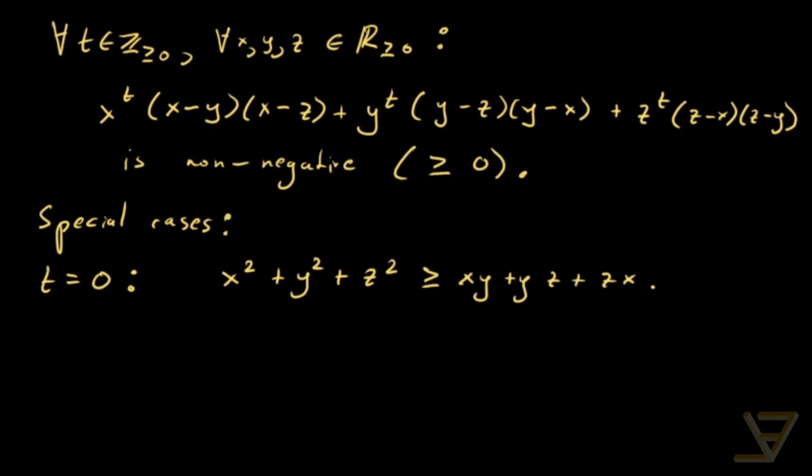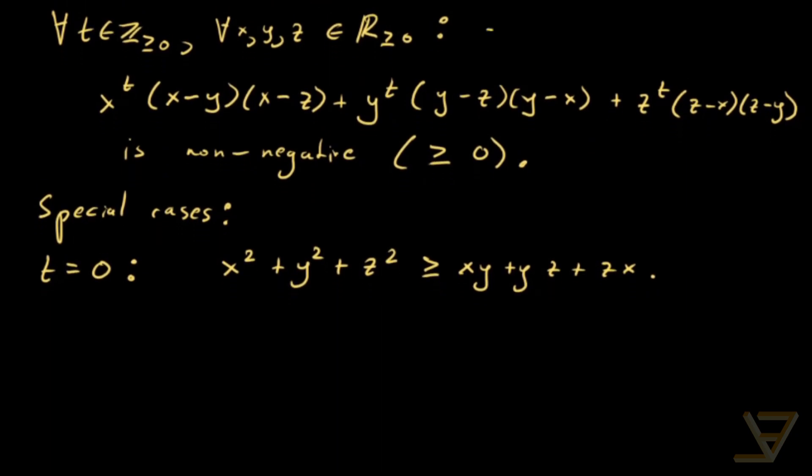And something that I should mention is that we said here that x, y, and z have to be in the non-negative reals. But if t is an even non-negative integer, then x, y, z can be any real numbers. But we won't be proving it in that case.